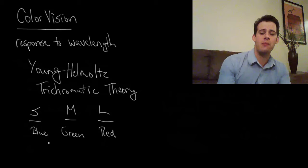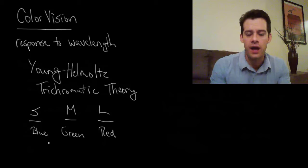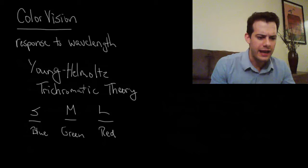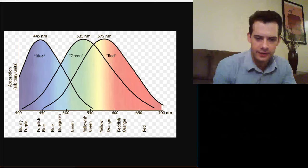Because it turns out Young Helmholtz were thinking about this before we had any real knowledge of the types of cells in the retina. It was a hundred years later before we could really find that we do actually have three different cone types in the retina. And then a few decades after that where we could find exactly how sensitive they were to different wavelengths of light. So based on that we have something that looks like this.